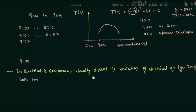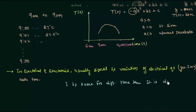One very important point: if the current or voltage remains the same for different times, it is not a signal — it is a direct value. For example, if the current is the same at t1 and t2, that is direct current (DC), not a signal. We can write di = 0, meaning the current is not changing. A signal must vary with the independent quantity.